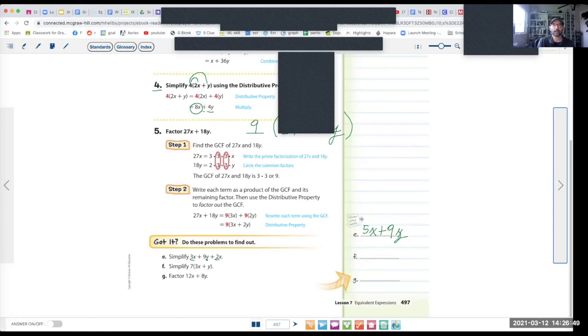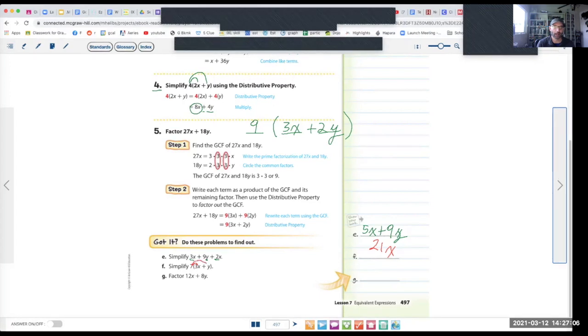All right, so now let's try letter F. Letter F is like what we just did above. Ready? Go. All right, so you should have had 7 times 3x is 21x, right? And that's 21x. And 7 times y, it's just like 7 times 1y, is 7y. 21x plus 7y. All right.